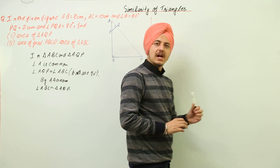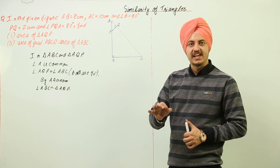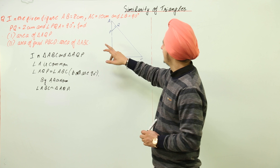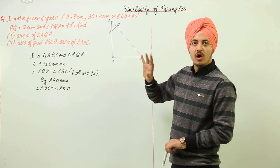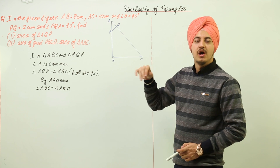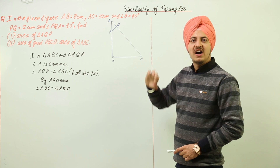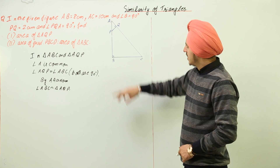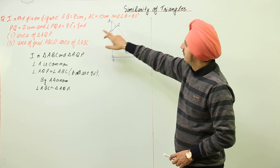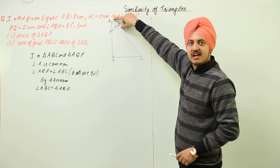Since both triangles are similar, their corresponding sides have the same ratio. To find the area of triangle AQP, we use the formula: half into base into height. Looking at triangle AQP, PQ is the height. We need to find the base AQ.